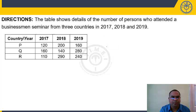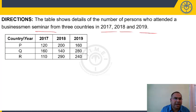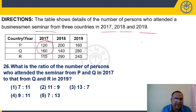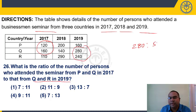Questions 26 to 30: The table shows the number of persons who attended a business seminar from three countries P, Q, and R in years 2017, 2018, and 2019. Question 26: What is the ratio of persons from P and Q in 2017 to persons from Q and R in 2019? P+Q in 2017 = 280. Q+R in 2019: Q=28(×10=280), R=24(×10=240) → 520. Ratio = 280:520 = 7:13. Answer: choice 5.